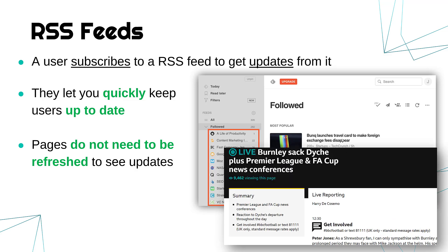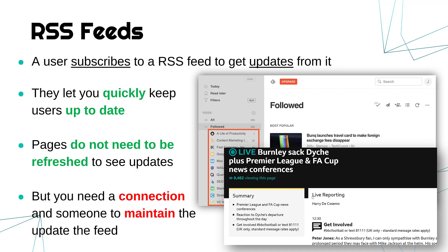A relatable example might be something like BBC News or BBC Sport live feeds — these are web feeds, not RSS feeds, but it's a similar idea: you don't have to sit and refresh, the next bulletin comes in as it's happening. On the downside, you need an internet connection since it's a web page, and it's not live if you lose connection. It also has to be maintained — somebody has to actually push content to the RSS feed, which takes up time and money.